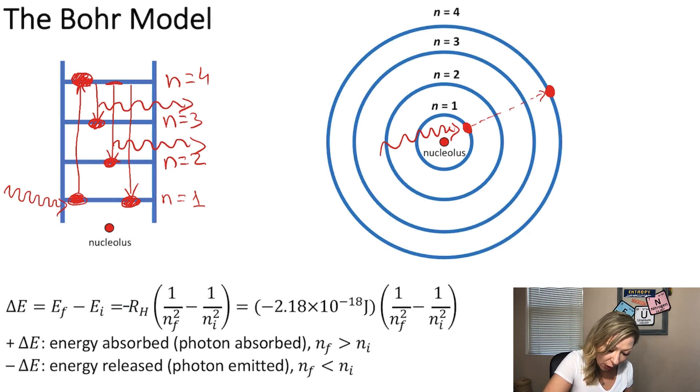And then when we go from N equals 4 to N equals 1, right down there, we are again going to emit a photon, which has an even higher energy. So this is basically how line spectra are created.